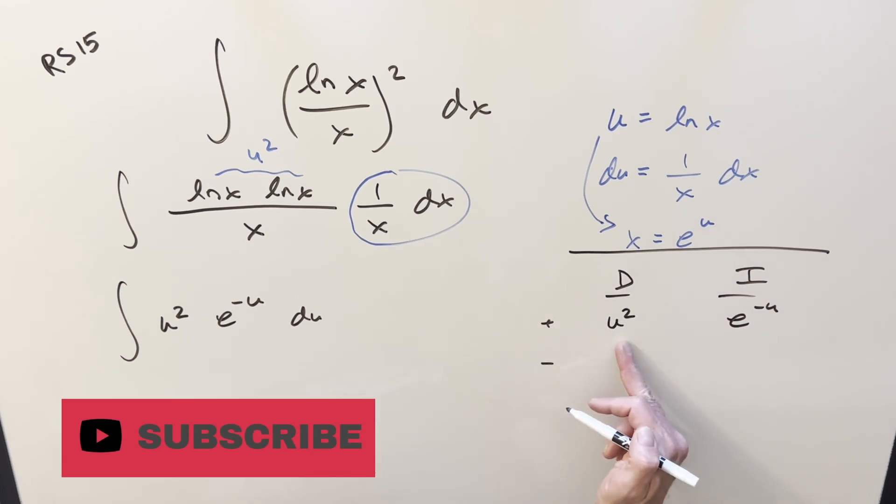So what's going to happen? Let's just differentiate this a bunch of times. It's going to be 2u for the first one. Second derivative is going to be just 2. Third derivative, 0.